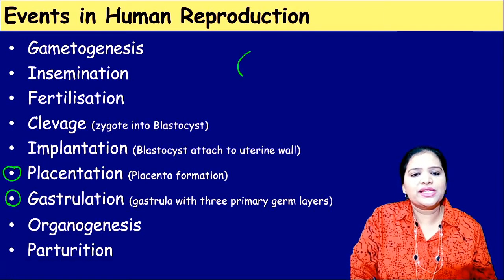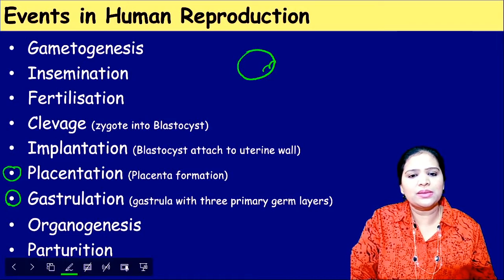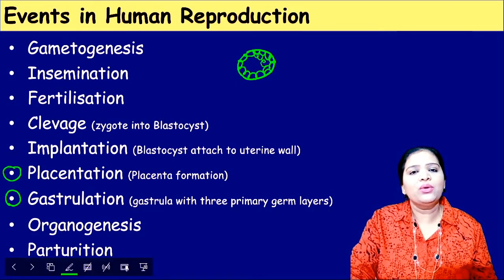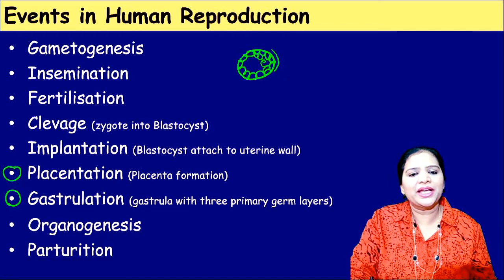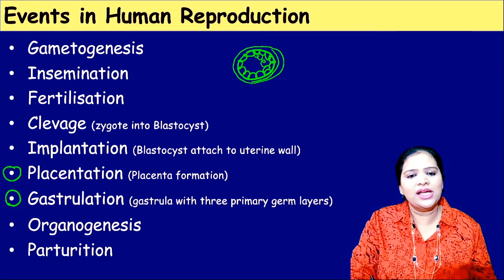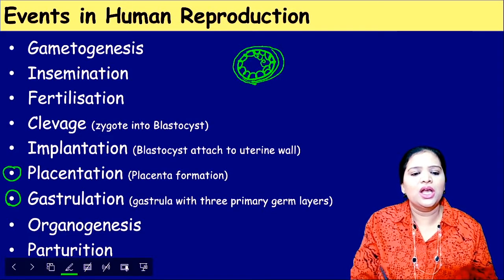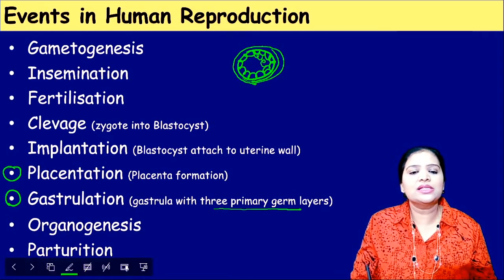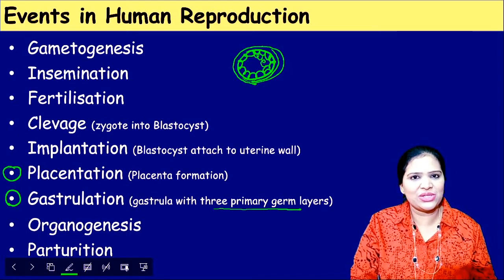The next one is gastrulation. The blastocyst has around 150 to 200 cells. Surrounding these cells, a triple-layered covering forms — this is called gastrulation. Three layers of primary germ cells are produced. This is called gastrulation.